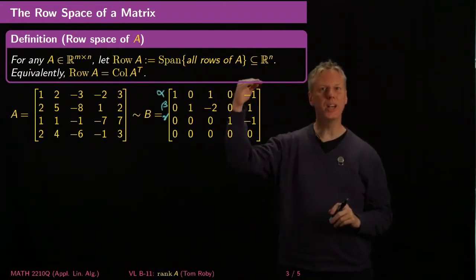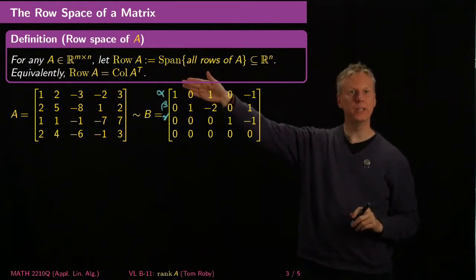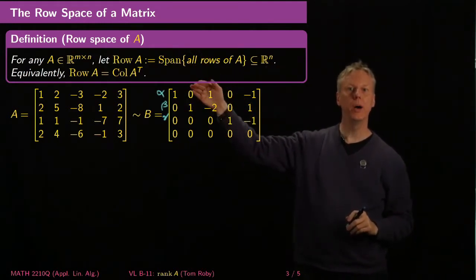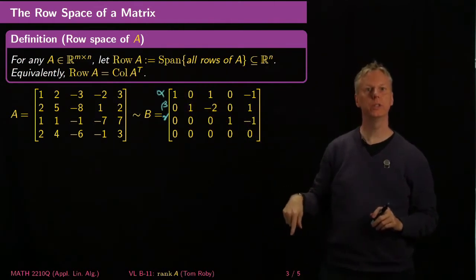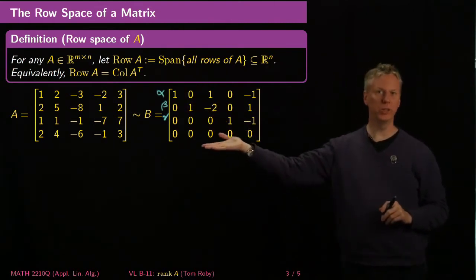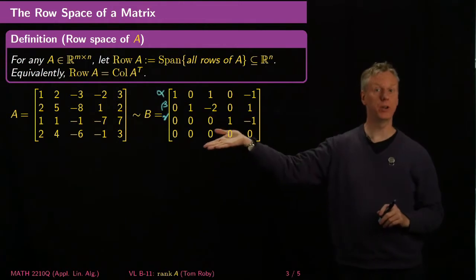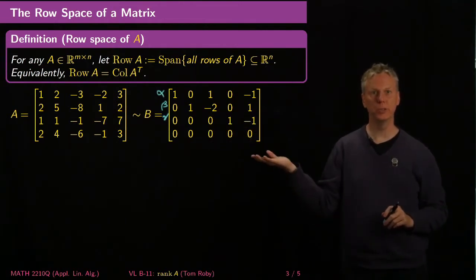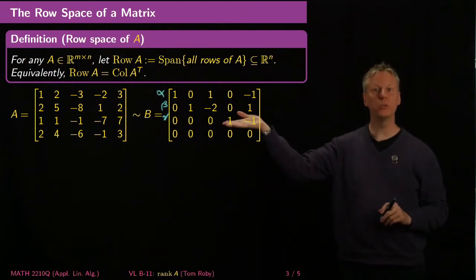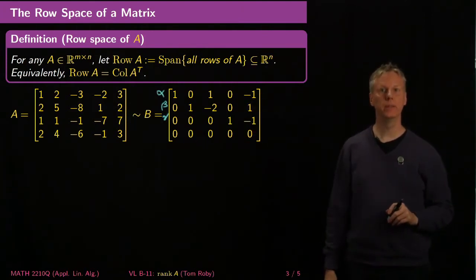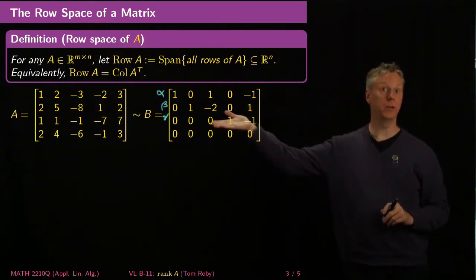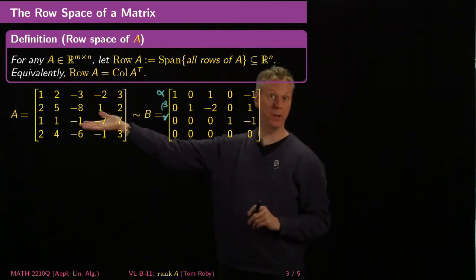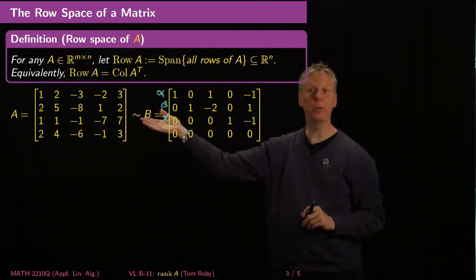It's obvious from this echelon staircase form of the matrix that the pivot rows — which in row reduced echelon form means every non-zero row — are linearly independent. And they span the row space of B; but by what we just showed, they also span the row space of A.